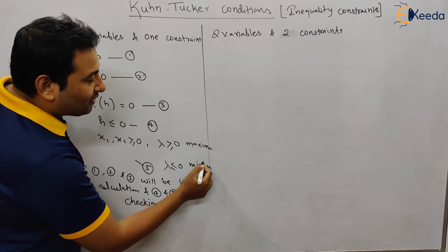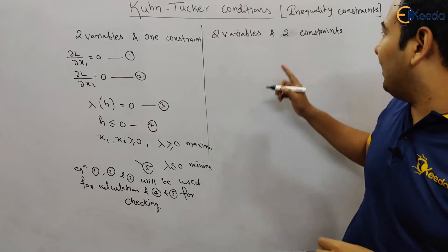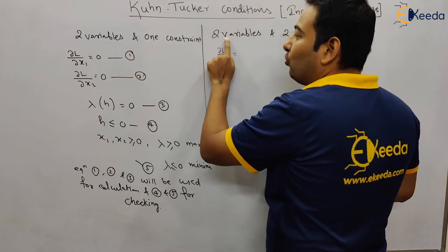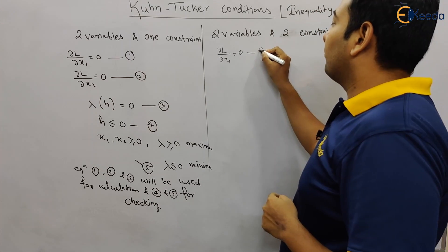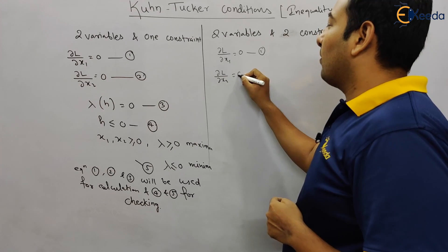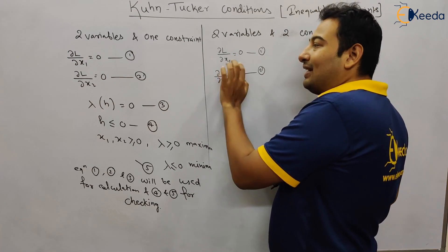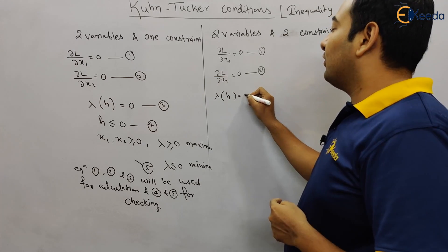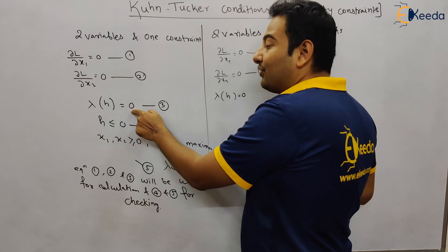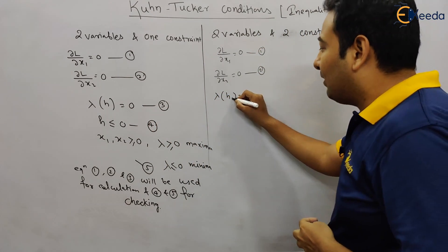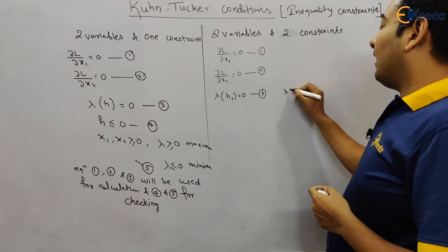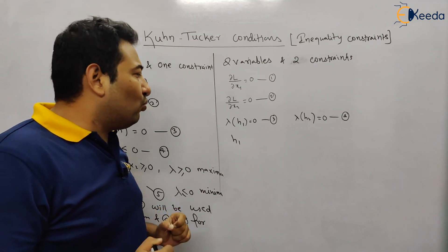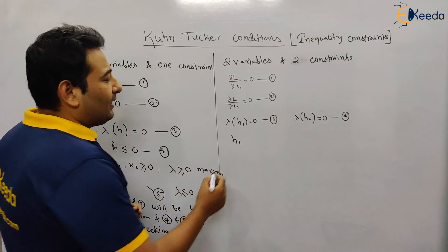Now let us discuss the conditions for two variables and two constraints. Conditions one and two are the same — differentiate L with respect to x1 and x2 — but the formation of L is different, which we'll discuss later. For condition three, since there are two constraints, we have lambda1 times the first constraint equals zero, and lambda2 times the second constraint equals zero.